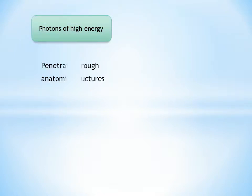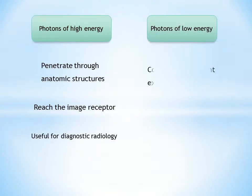These two types of photons are produced, one which are of high energy and second type which are of low energy. The photons of high energy penetrate through anatomic structures. They reach the image receptor and are useful for diagnostic radiology.